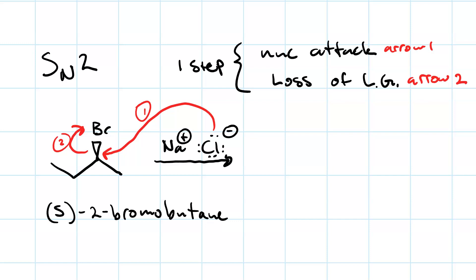For our products, we'll get the leaving group, the bromide ion, and we'll also get 2-chlorobutane. But the chloride had to attack from the backside, so we get an inversion of configuration and we get R-2-chlorobutane.